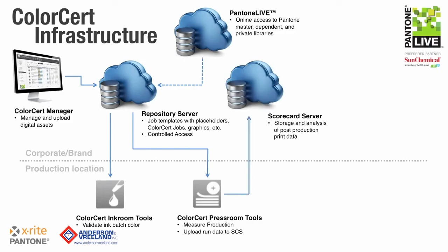When the production order is finished, we upload the run data to the scorecard server. This server allows us to view and analyze production data over time. We can compare production from one press to another, one production facility to another. We can even view trends by individual color, item, brand, etc. Having access to this data provides us with the information necessary to truly embrace continuous improvement in our manufacturing locations.